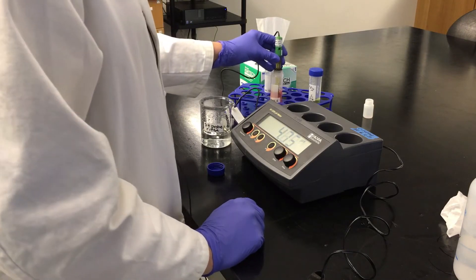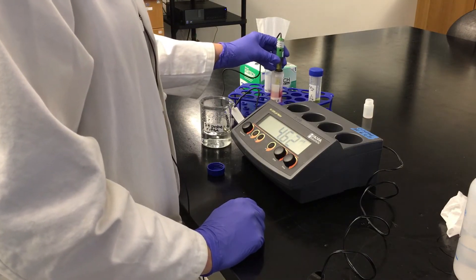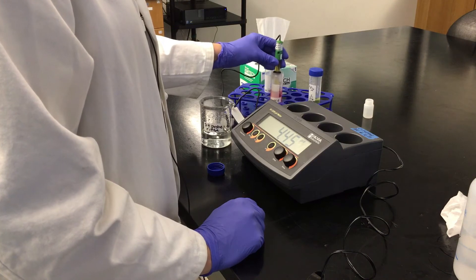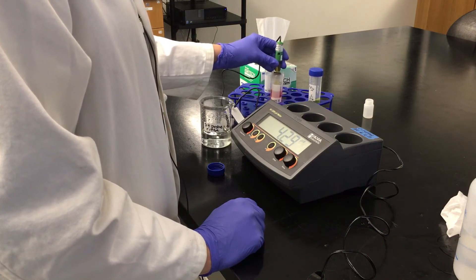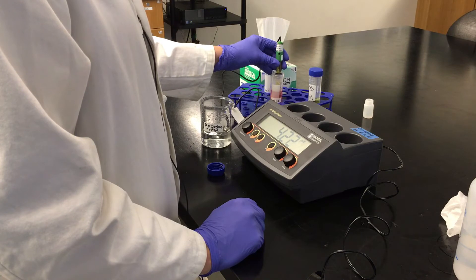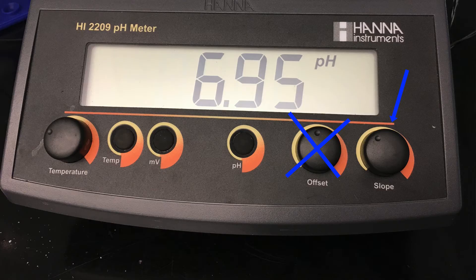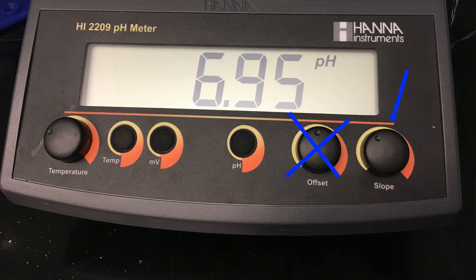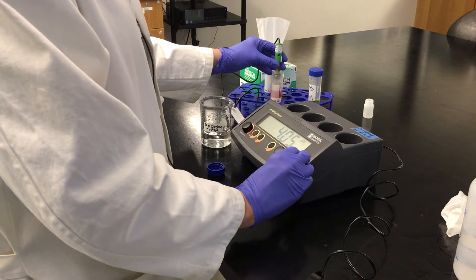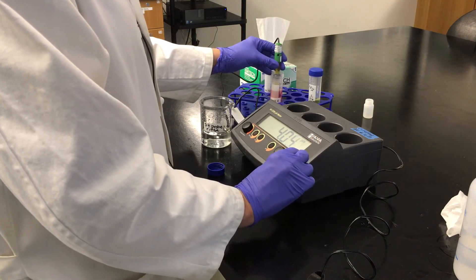Okay, I'm going to give it a little bit to stabilize. Now that it's stabilized, I'm going to adjust the slope knob. Not the offset, but the slope knob until it reads pH 4.